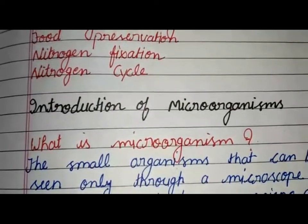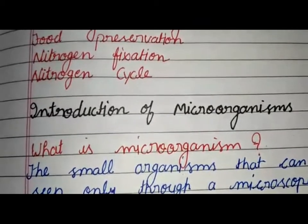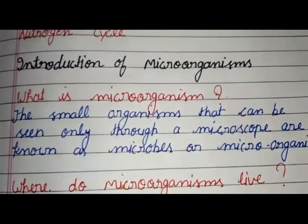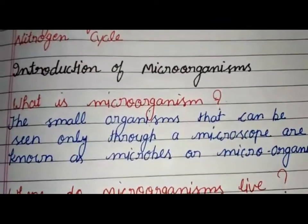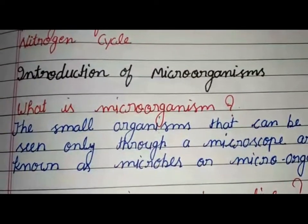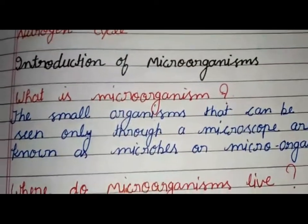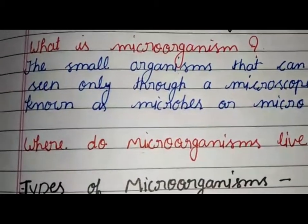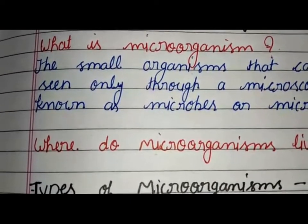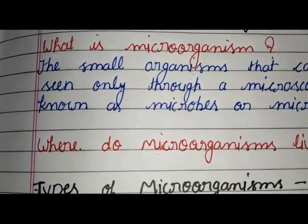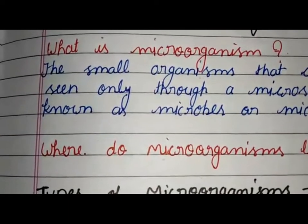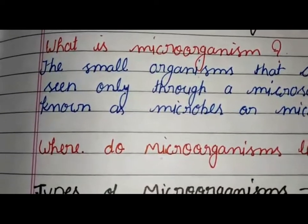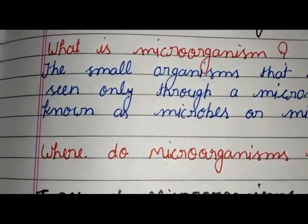So the next question: what is a microorganism? The small organisms that can be seen only through a microscope are known as microbes or microorganisms. Where do microorganisms live? They live in all types of environments, ranging from ice-cold climates to hot springs, and deserts to marshy lands. They are also found inside the body of animals, including humans. Some organisms grow on other organisms while others exist freely.